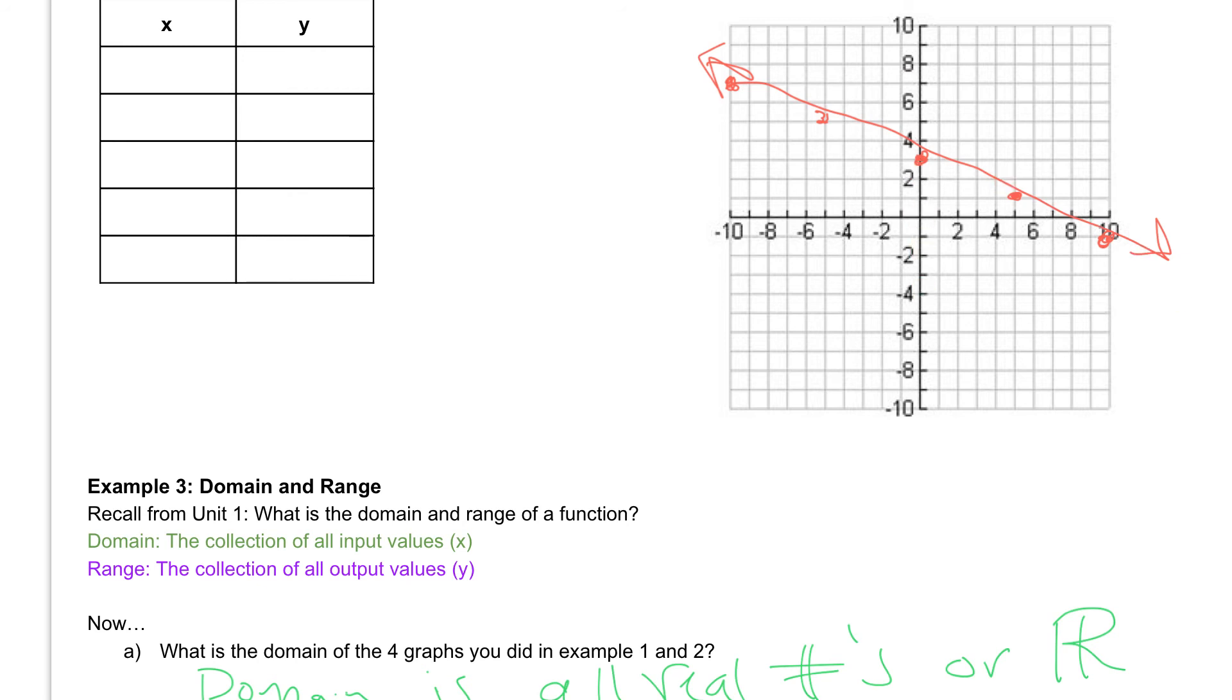Every single y value will, because as this goes down, if I choose negative 10, negative 10 will somehow find a point on my graph somewhere over in this area. Same thing if I go over here, negative 15 will eventually find a spot on my graph somewhere up here. So every single y value will find a point on my graph.